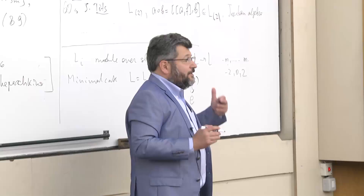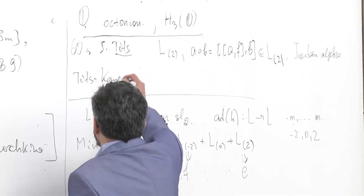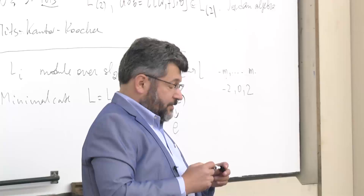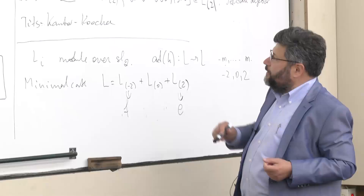Moreover, this construction can be reversed: every Jordan algebra can be obtained in this way. So if you have a Jordan algebra, you can construct a Lie algebra with these properties. This construction is known as the Tits-Kantor-Koecher construction. In this way, Tits was able to construct models for all exceptional Lie algebras — for example, E8. Jordan algebras are building blocks for exceptional Lie algebras.